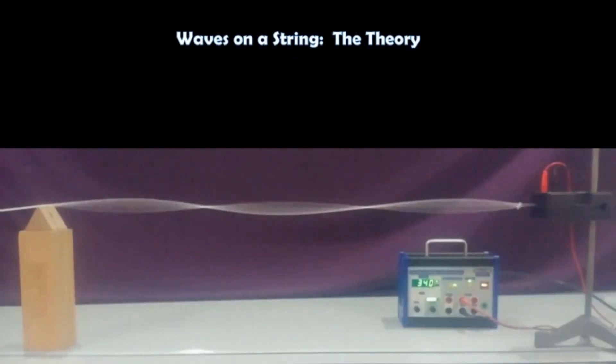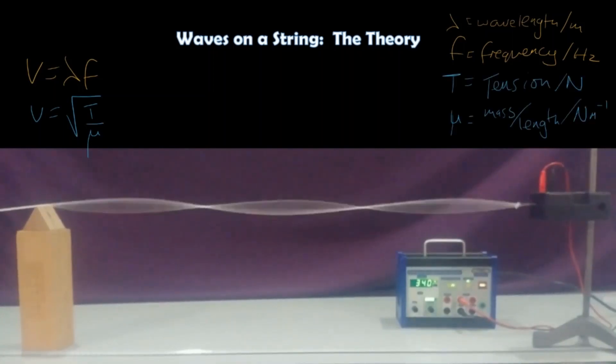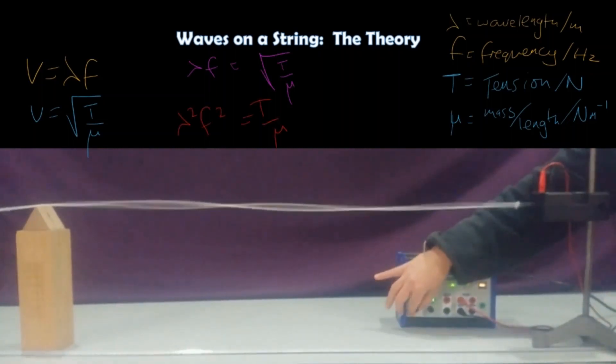The speed of a wave is related to its wavelength and its frequency. The speed of a wave on a string is also the square root of its tension divided by its mass per unit length. So if we equate these two equations and then square them, we get this relationship.